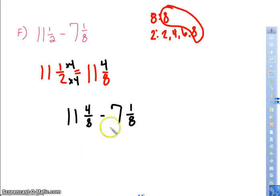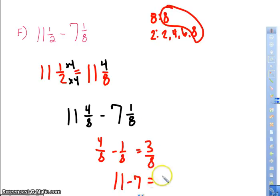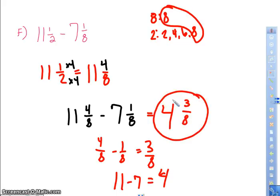4/8 minus 1/8 is 3/8. And 11 minus 7 is 4. So my answer is 4 3/8. And that can't be simplified. So we are done.